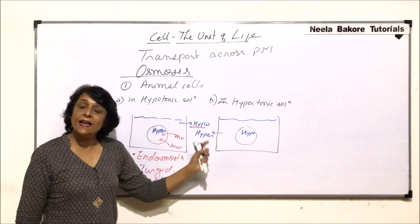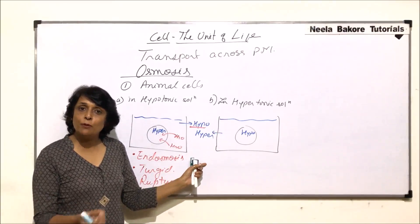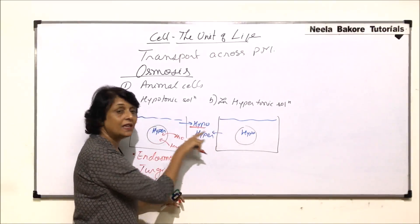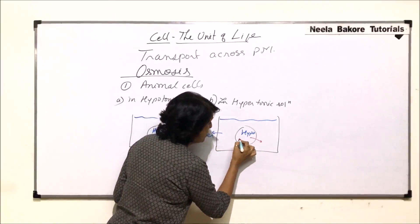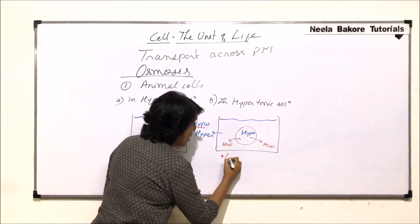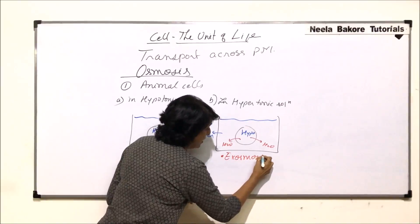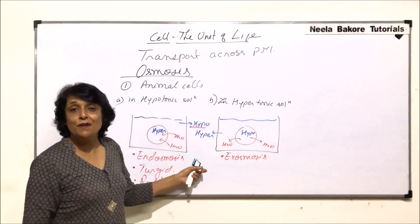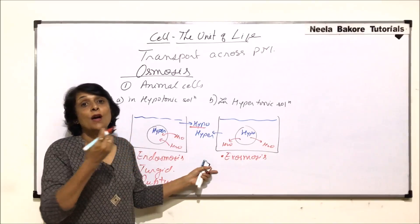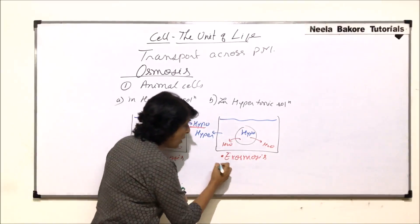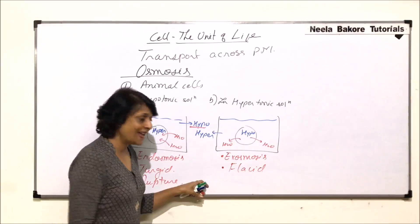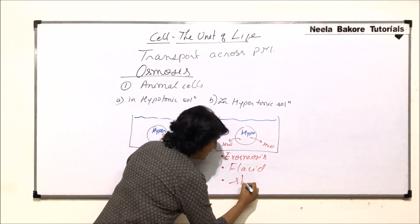In the second situation, again movement of water takes place from hypotonic to hypertonic. In this case, the cell is hypotonic and the medium is hypertonic, so water molecules are going to come out of the cell. We call this exosmosis. When exosmosis takes place, the cell is going to shrink first, and this shrinking due to exit of water causes the cell to become flaccid.